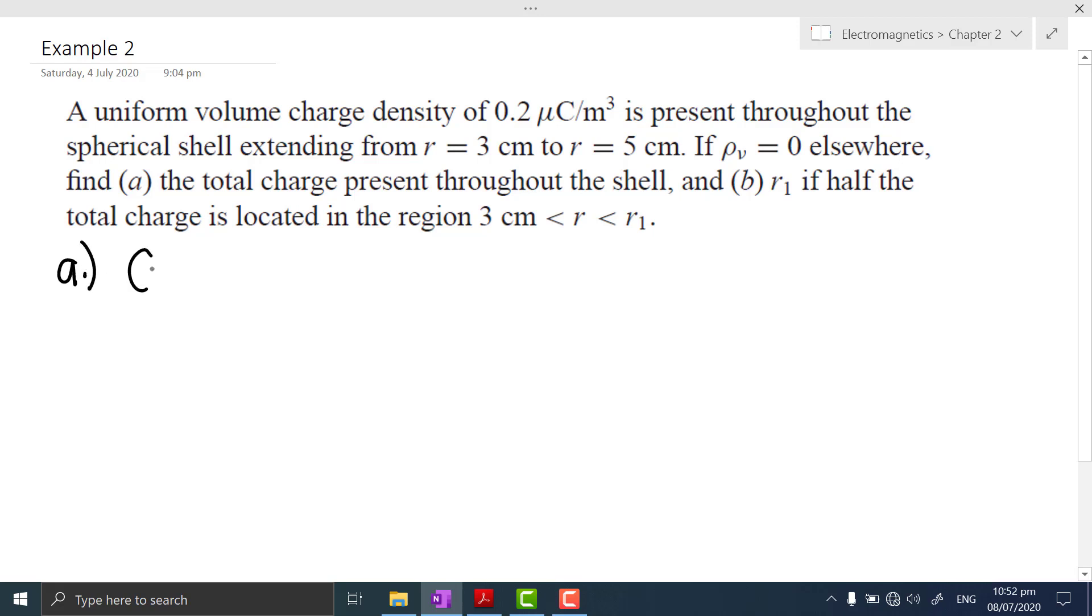Let's solve for part A. We know that the total charge inside the volume is the integral of the charge density, volume charge density times the differential volume integrated all throughout the volume. The volume charge density is given which is 0.2 times 10 raised to negative 6 coulombs per cubic meter. For a spherical coordinate system, the differential volume dV is equal to r² sin θ dr dθ dφ.